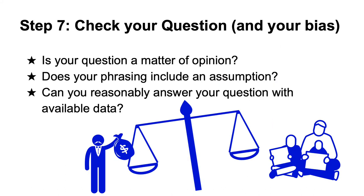Step 7: Look at your question objectively and make sure that you can realistically answer it with the kind of research you are doing, given the sources you have access to and the time you plan to spend on it. For example, while you could find out whether gentrification causes displacement using statistical research, you might have a harder time finding out how low-income communities feel about changes to their neighborhood. Many questions also include assumptions about topics that might be off-putting to a reader, so your question should be value-neutral, even if your research ends up making a compelling argument.